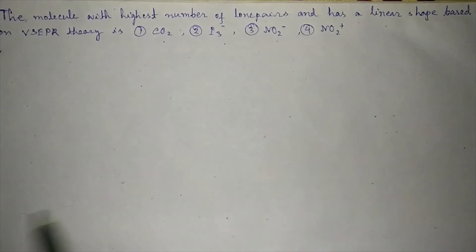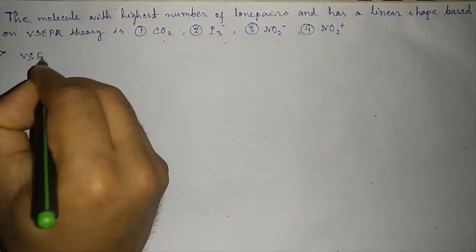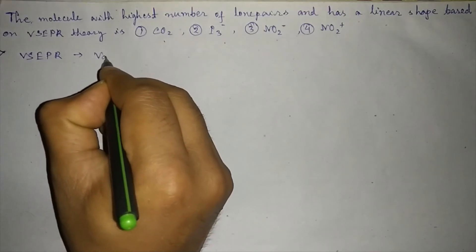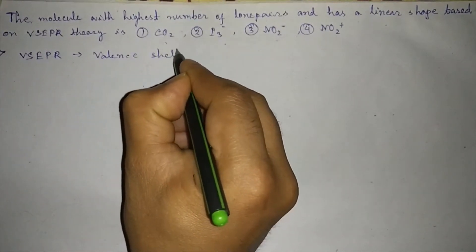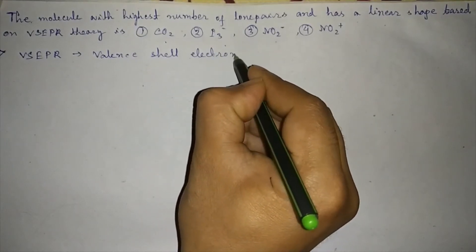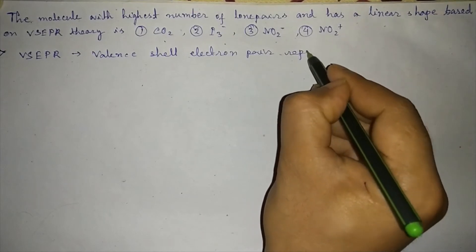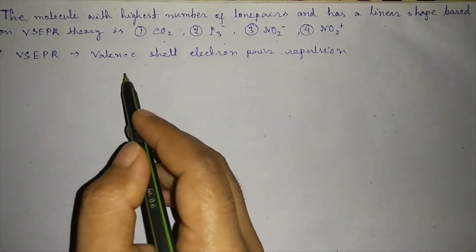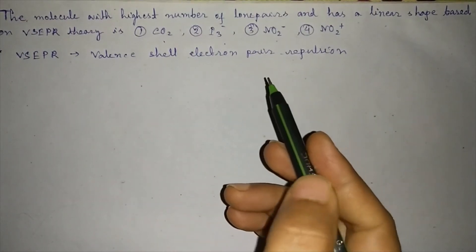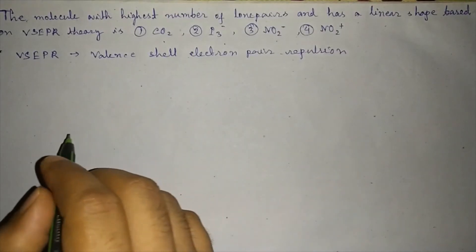First, we have to know what VSEPR theory is. VSEPR stands for Valence Shell Electron Pair Repulsion. Here we have to see the number of valence electrons around the central atom.